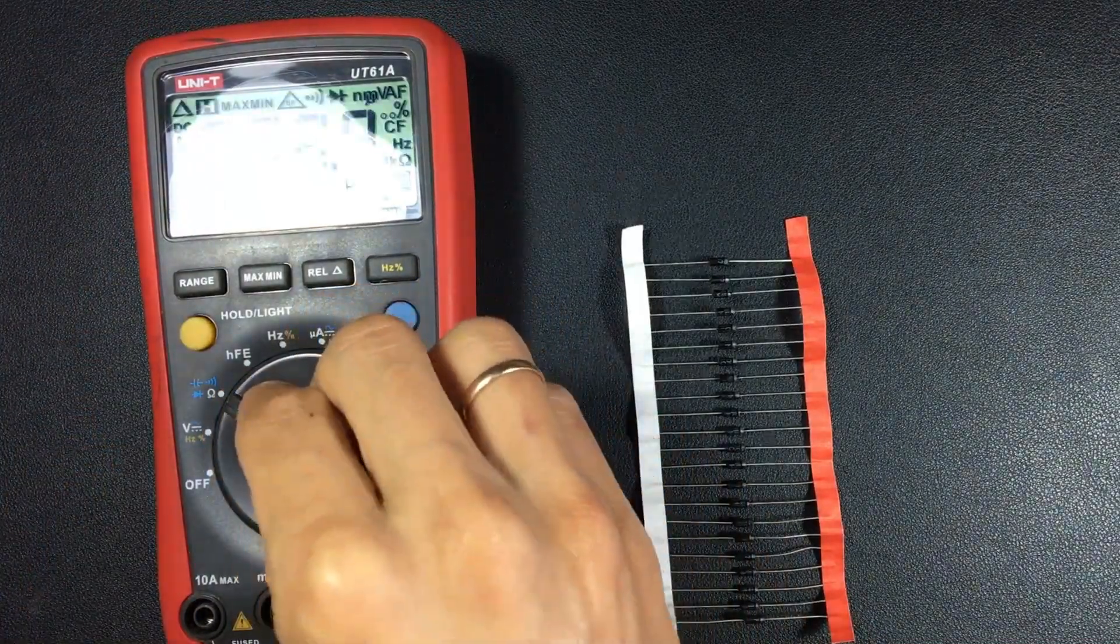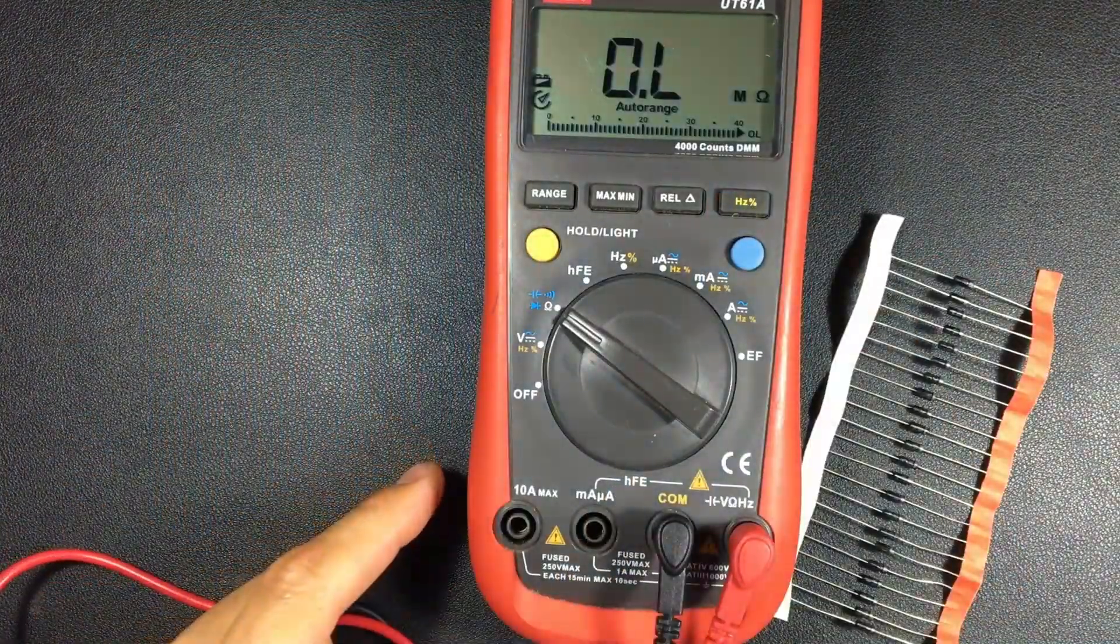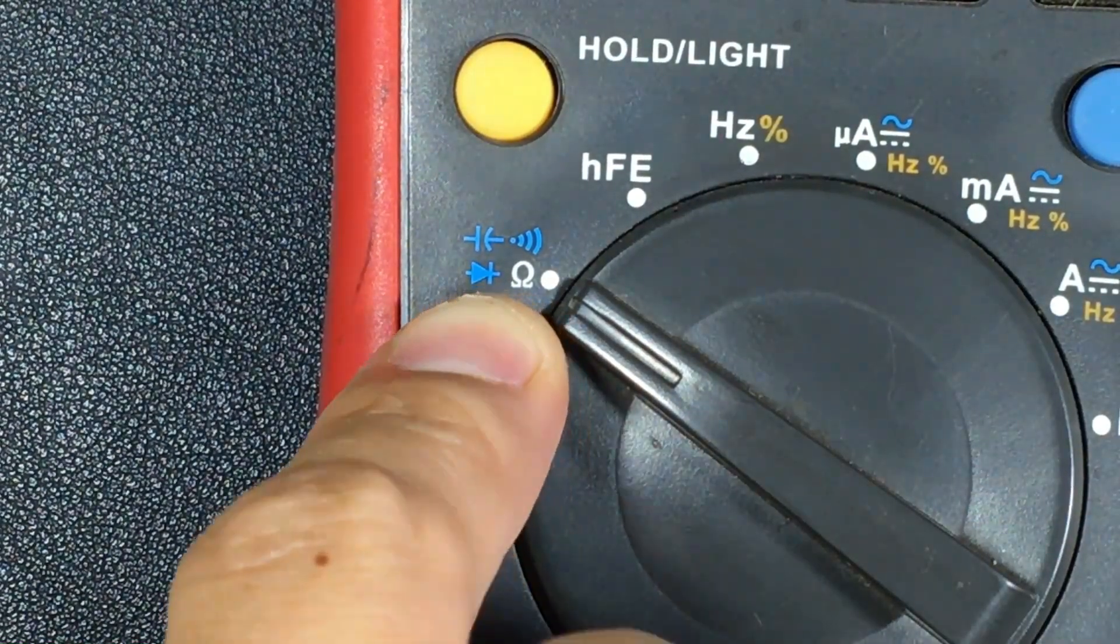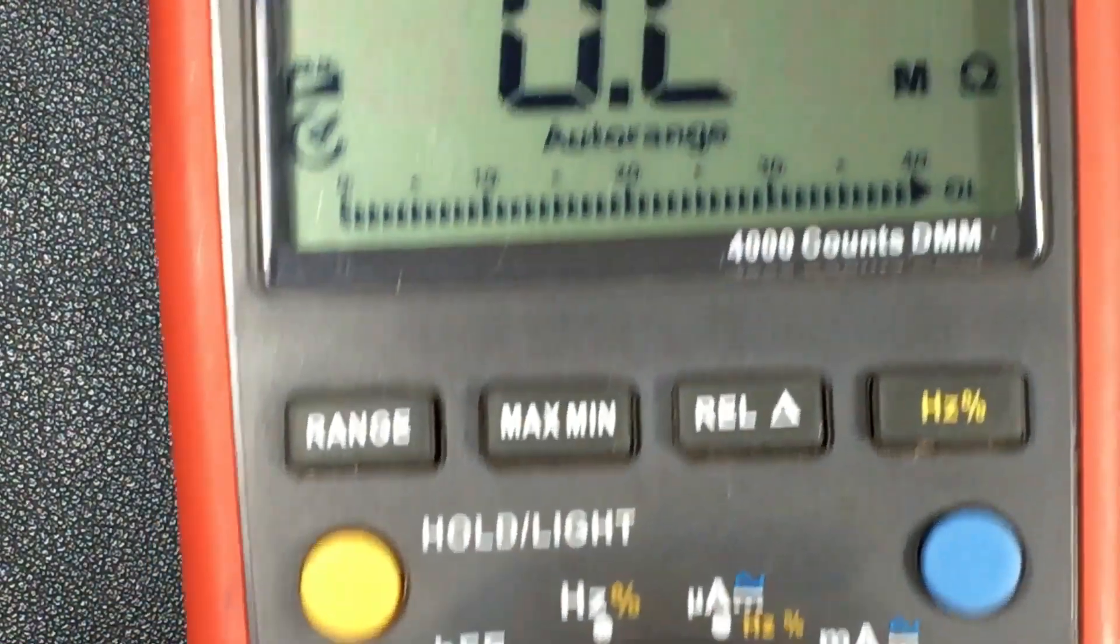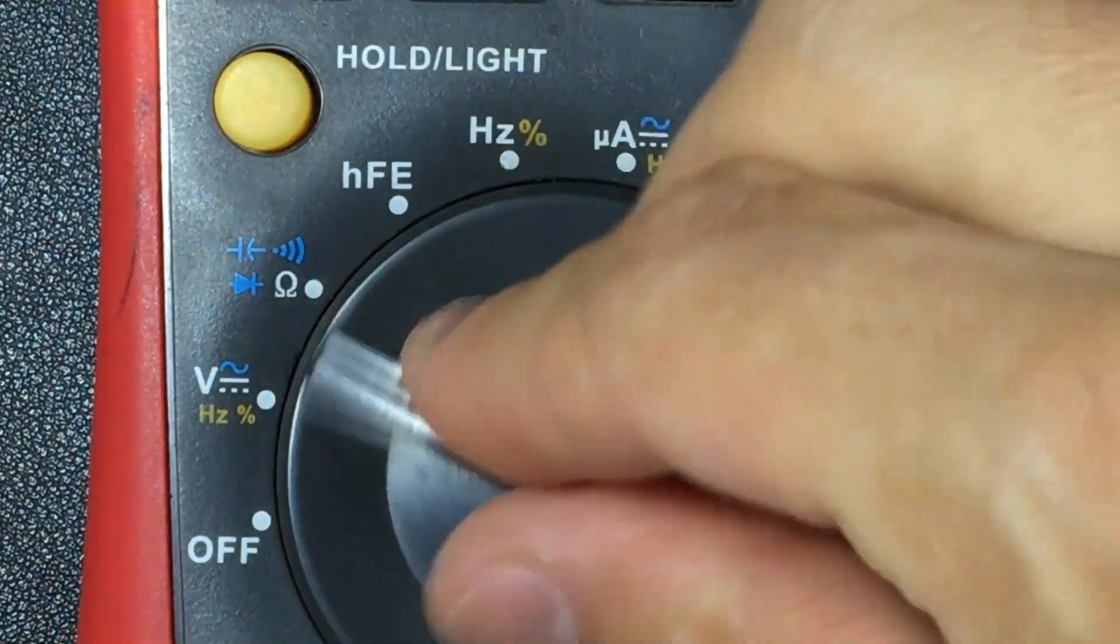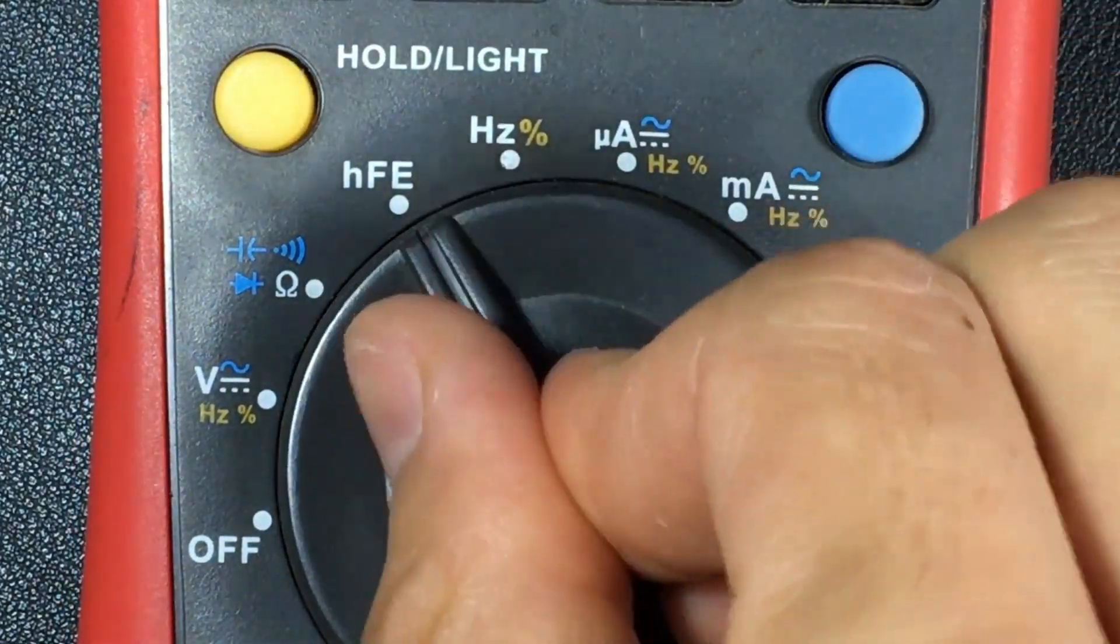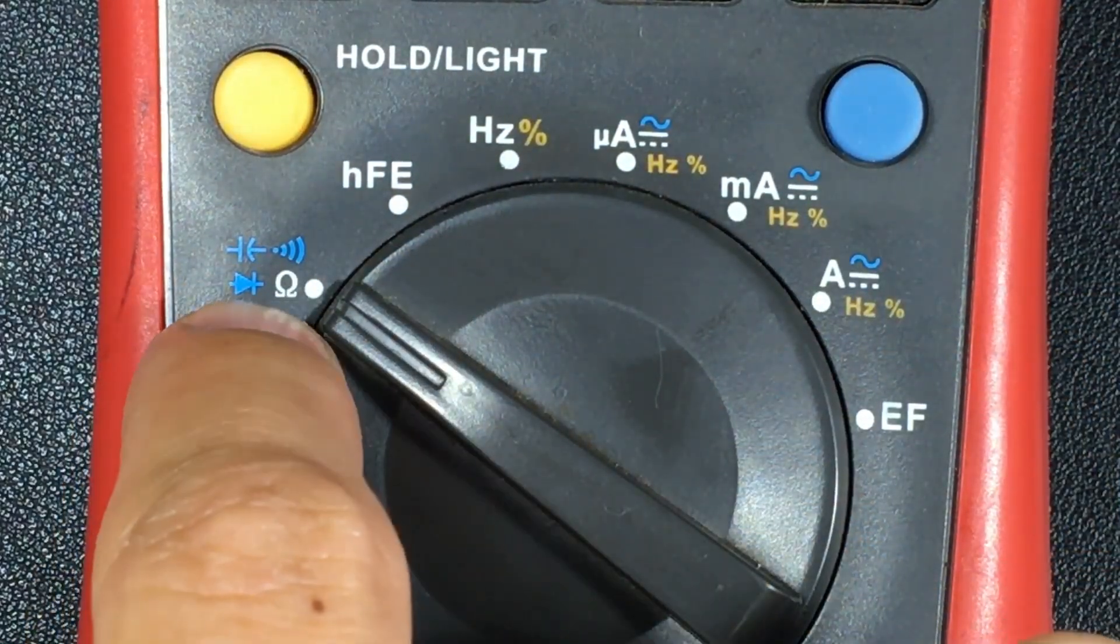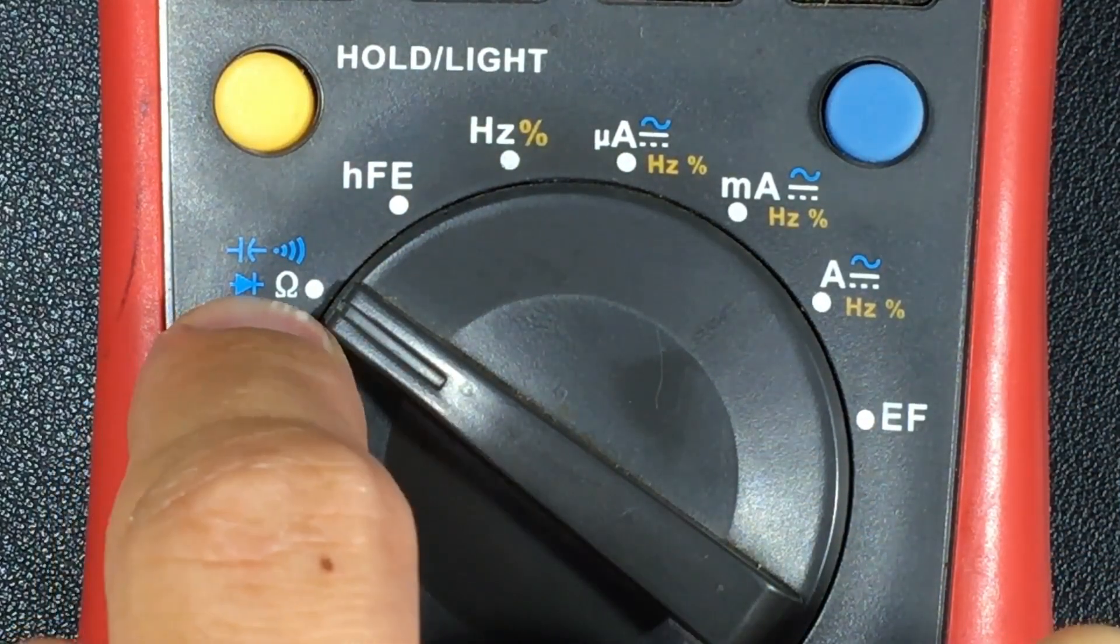If we place our multimeter in the diode position, you will find here the symbol of a diode. This is the position that will allow us to make that measurement. Notice that these multimeters and each of the positions have several functions. For example, this position has four different functions. When we place it, it is the white function.